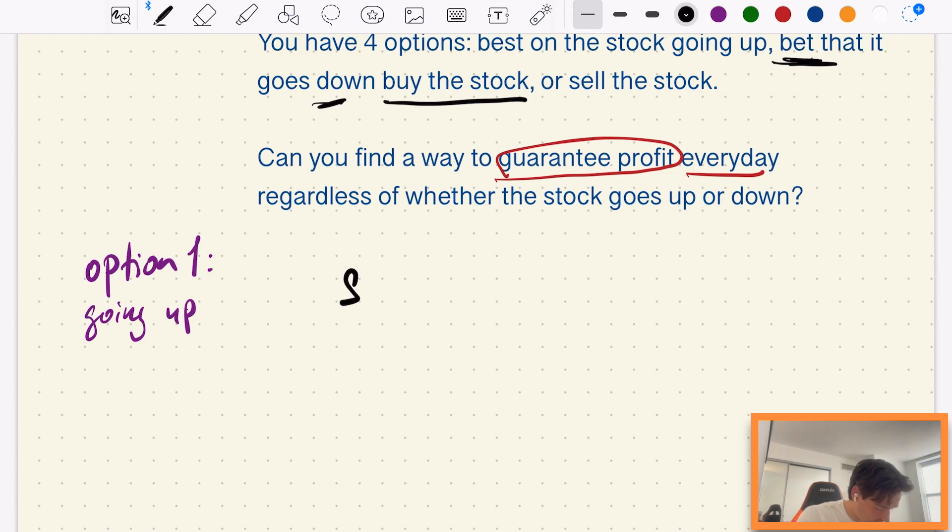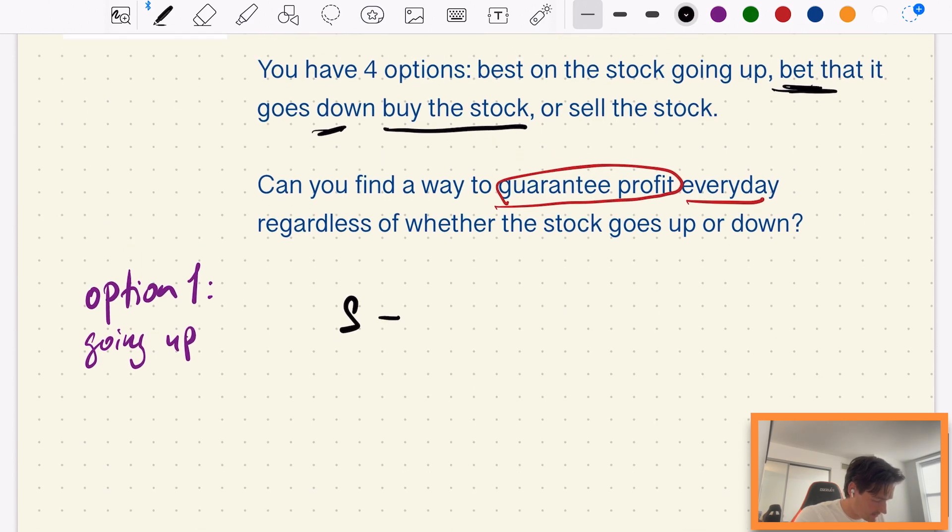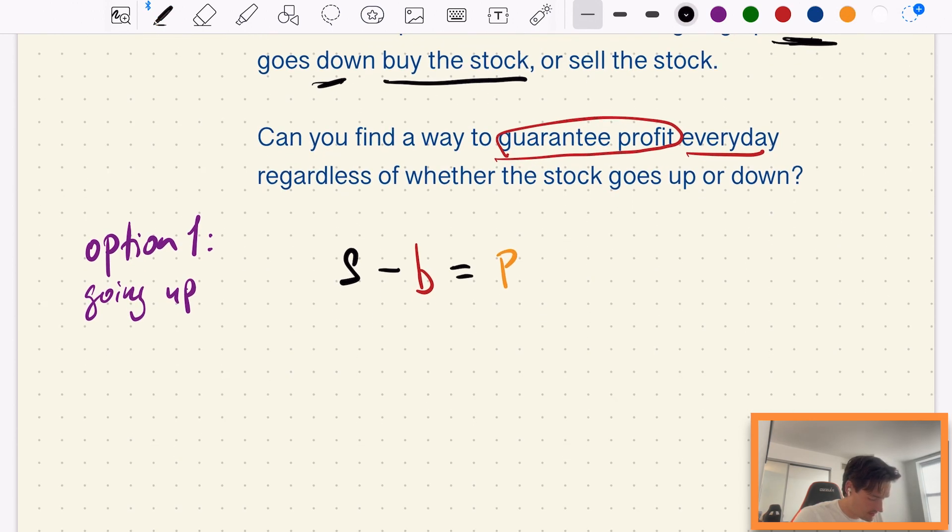So let me show you how this might look like. So own the stock, that would just be let's say S, that's us owning the stock, minus the bet of it going down. So let's just say this is going to be our bet going down, and then this is going to be our payout. We're going to have that as P. So now let's put some numbers to it. Owning the stock would be $100, and then we're going to have our bet minus our bet, $50, this will be our payout of $50.